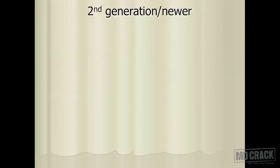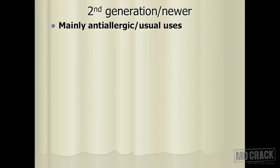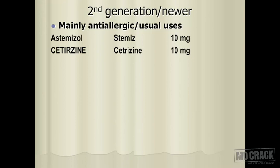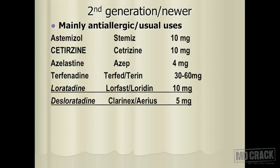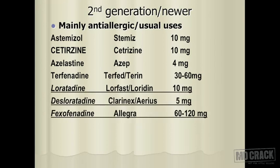Now we move on to generation 2, the newer antihistamine agents. These drugs are mainly used for allergic conditions and include astemizole, cetirizine, azelastine, terfenadine, loratadine, desloratadine and fexofenadine. Loratadine, desloratadine and fexofenadine are underlined as the most commonly used agents from the newer antihistamines, because they have the least sedating properties.